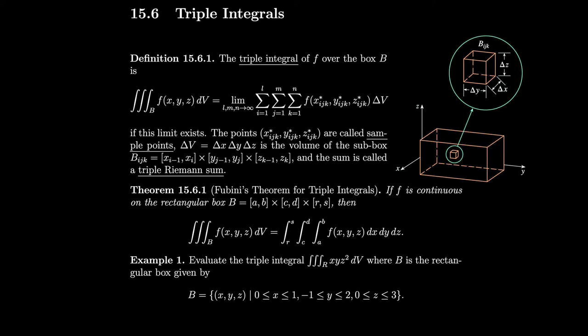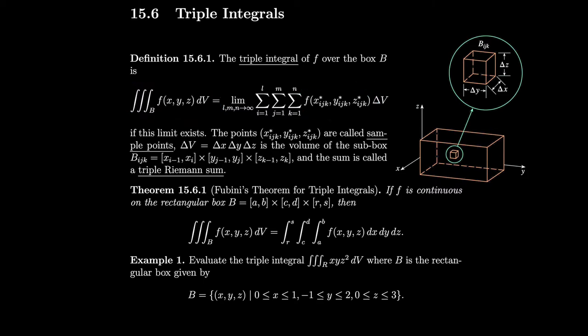Section 15.6, triple integrals. The triple integral of f over the box b is defined as the triple integral over b of f(x, y, z) dV, and we define that as the limit of the triple Riemann sum of f at certain sample points, provided this limit exists. These sample points are now ordered triples, and instead of delta A we have delta V, equal to delta x delta y delta z, because z is now an independent variable.